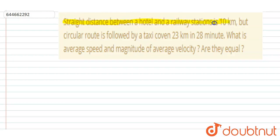hotel and a railway station is 10 kilometer, but the circular route is followed by a taxi covering 23 kilometer in 28 minutes. What is the average speed and magnitude of the average velocity?